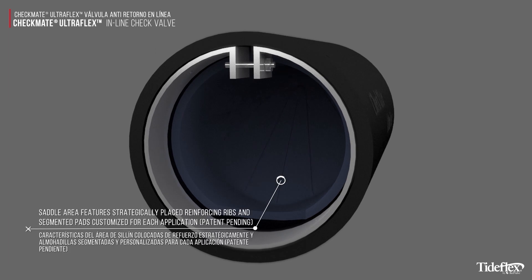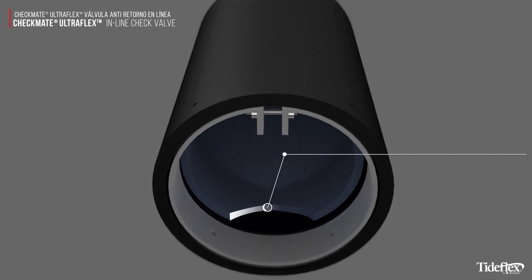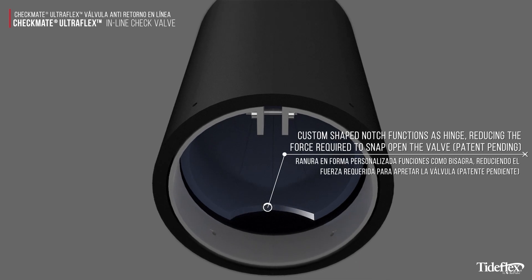The Checkmate saddle area features strategically placed reinforcing ribs and segmented pads customized for each application. A custom-shaped notch functions as a hinge, reducing the force required to snap open the valve.